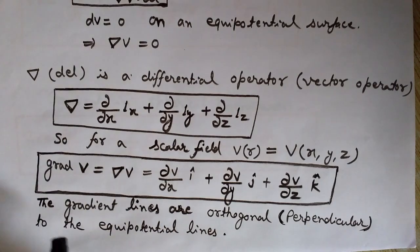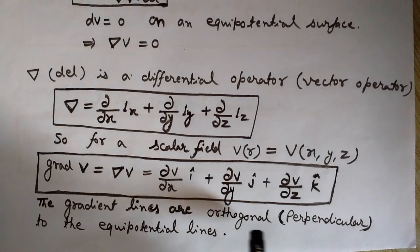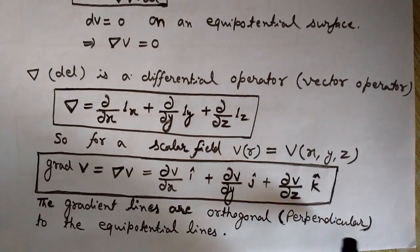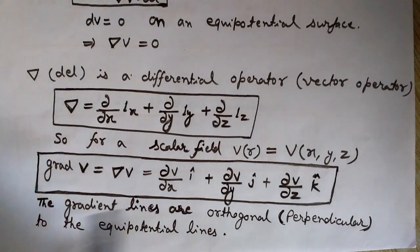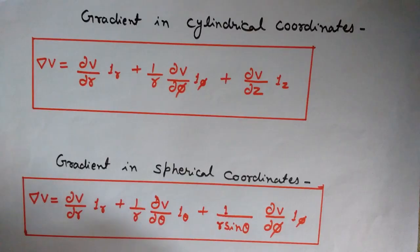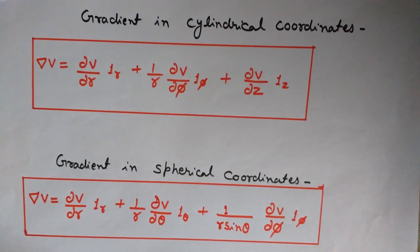One more important fact: the gradient lines are orthogonal — meaning perpendicular — to the equipotential lines. This is a very important property. The formula we have seen so far is for gradient in Cartesian coordinates.